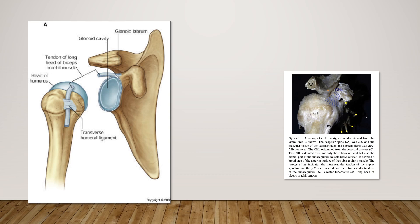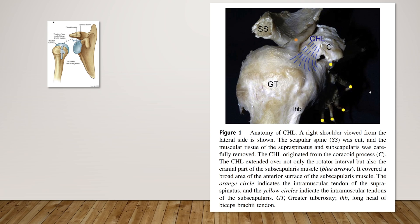The left image helps you understand the shoulder joint orientation. Focus on the acromion, coracoid process, scapula spine, and long head of bicep tendon. The right shoulder image shows the right scapula from the lateral side.